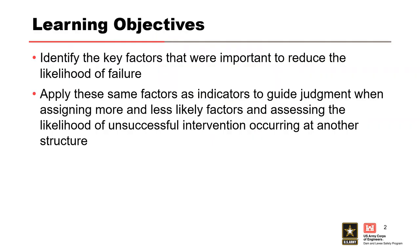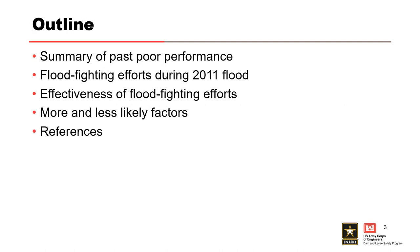During the presentation, we will identify the key factors that were important in reducing the likelihood of failure of the levee, and apply those same factors as indicators to guide judgment when assigning more and less likely factors and assessing the likelihood of unsuccessful intervention occurring at another structure. The first portion will summarize past performance issues observed at Buck Chute, followed by a summary of the BEP factors discussed during the previous case history presentation.